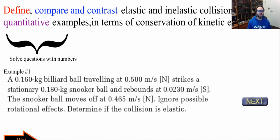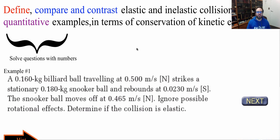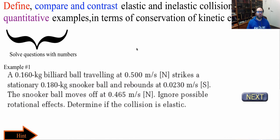So example one, we have a 0.16 kilogram billiard ball traveling at 0.5 meters per second north, strikes a stationary snooker ball and rebounds at 0.023 meters per second south. The snooker ball moves off at 0.465 meters per second north. Ignore any possible rotational effects of the ball. So we're just saying it's a straight hit. Determine if the collision is elastic.